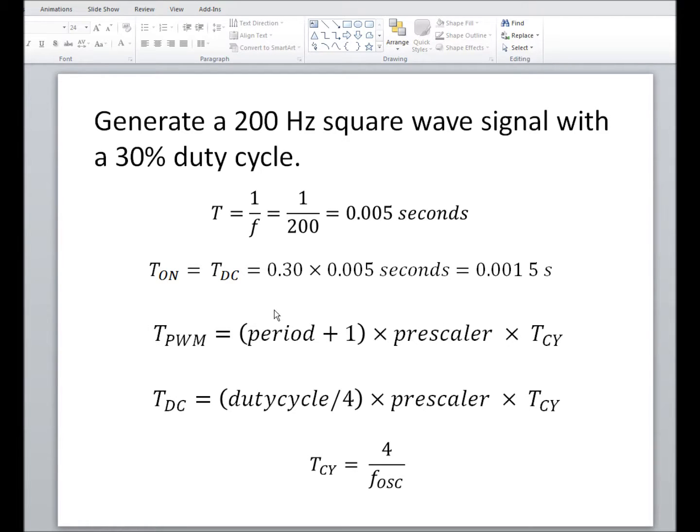Now, the formulas that we have for doing our calculations are these. TPWM equals period plus 1 times the prescaler times Tcy, where Tcy is 4 over Fosc, the oscillator frequency. Remember, that default is 1 megahertz. So, you have three numbers, period, prescaler, and Fosc, that you can play with to get as close to the required time as possible. Similarly, with TDC. Although, once you've chosen Fosc and prescaler for TPWM, you just need to get the correct duty cycle.